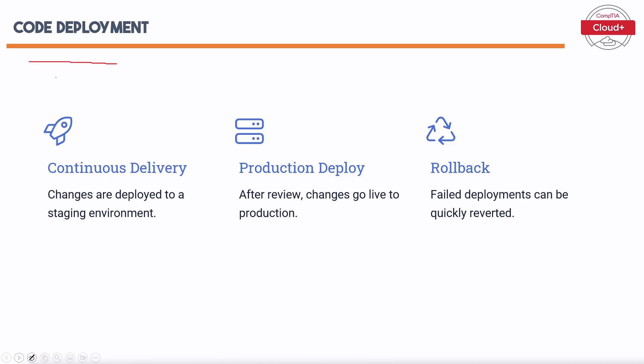Deploying code efficiently and reliably is important for maintaining application performance and availability. The key stages of code deployment are: First, Continuous Delivery — changes are deployed to a staging environment for further testing and validation. Second, Production Deploy — after review, changes go live to production, ensuring only thoroughly tested changes are released to end users. Third, Rollback — failed deployments can be quickly reverted, allowing teams to restore a previous stable state.